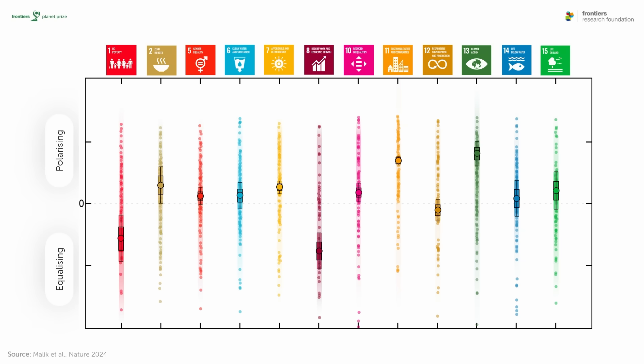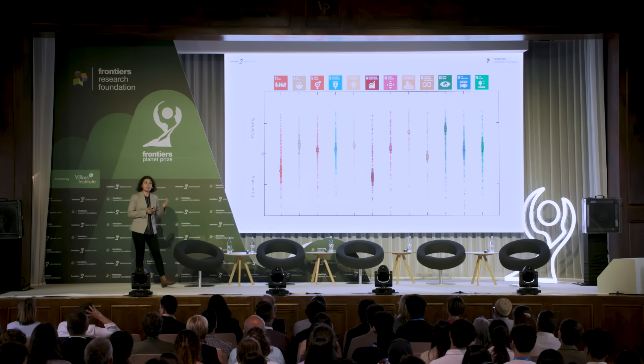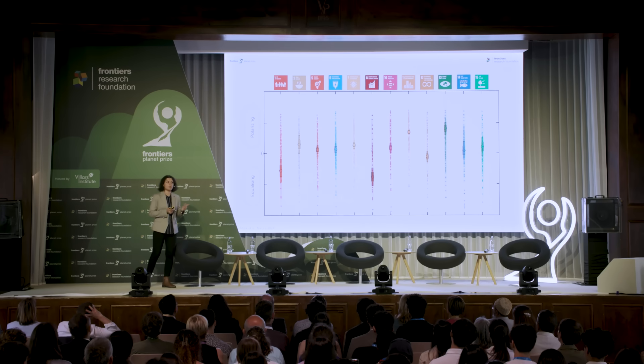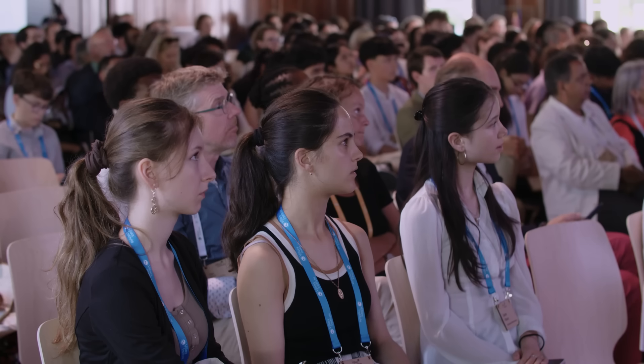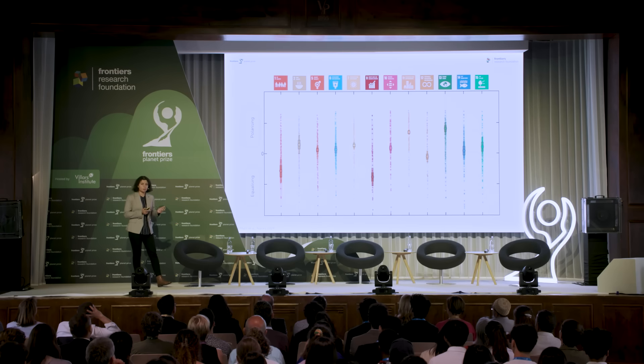Looking at the key findings for the 12 SDGs we analyzed: some are experiencing equalizing trends. Trade promotes economic growth, jobs, and income growth in countries around the world. For some SDGs — for example SDG 1 — we have seen an improvement over the 29-year period that we analyzed.